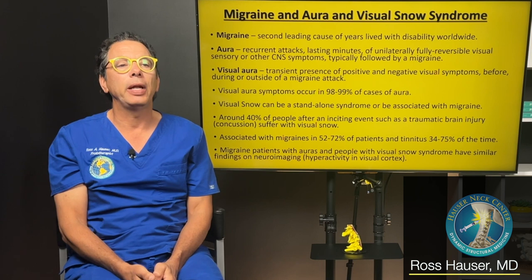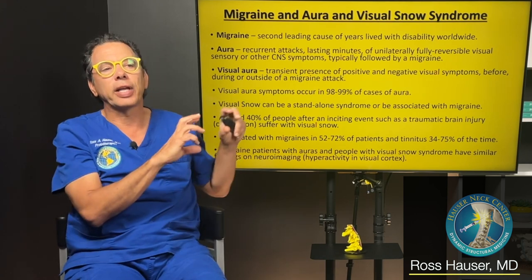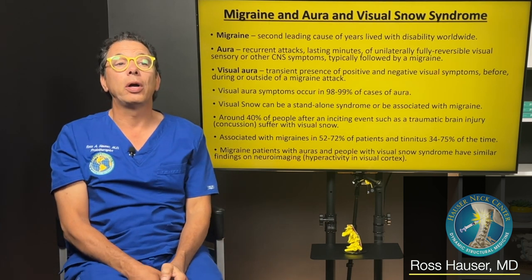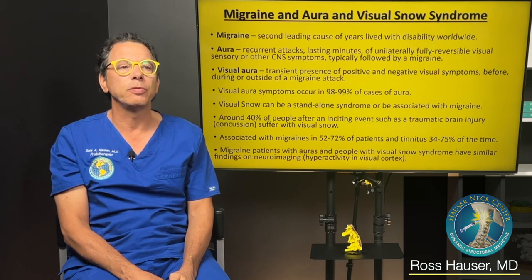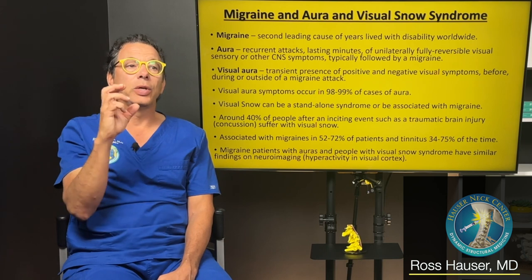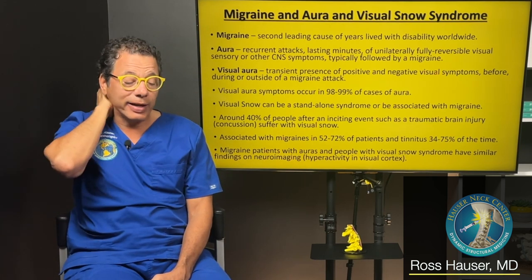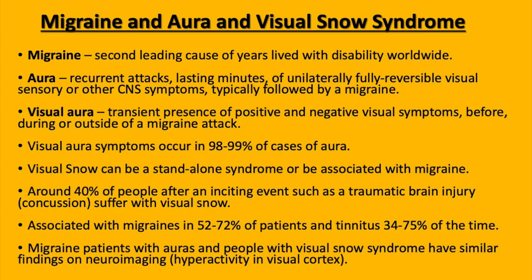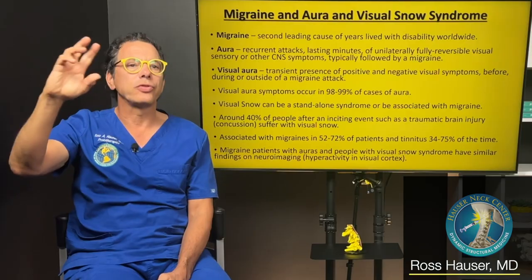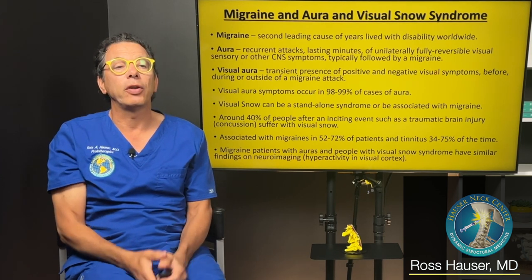Migraine is the second leading cause of years lived with disability. An aura consists of recurrent attacks lasting minutes — unilaterally fully reversible visual, sensory, or other CNS symptoms — typically followed by a migraine. Visual aura is the transient presence of positive and negative visual symptoms before, during, or after a migraine attack. A lot of times the aura is some kind of visual experience — flashing lights, visual snow, or other phenomena. Visual aura symptoms occur in 98 to 99 percent of people who have an aura before a migraine.